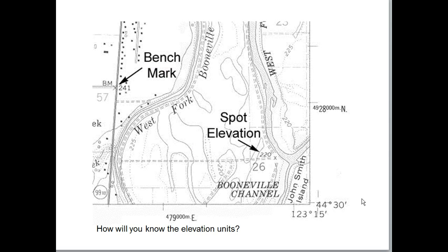Here are some examples on a topographic map. A benchmark is an X marks the spot — the benchmark here shows an elevation of 241. You can also have just a spot elevation, which is an X without the 'BM' label, where you'd expect to find a brass cap. A triangle at the top of a mountain can also indicate elevation. When given a topo map, think about whether the elevation unit is feet, inches, or meters.